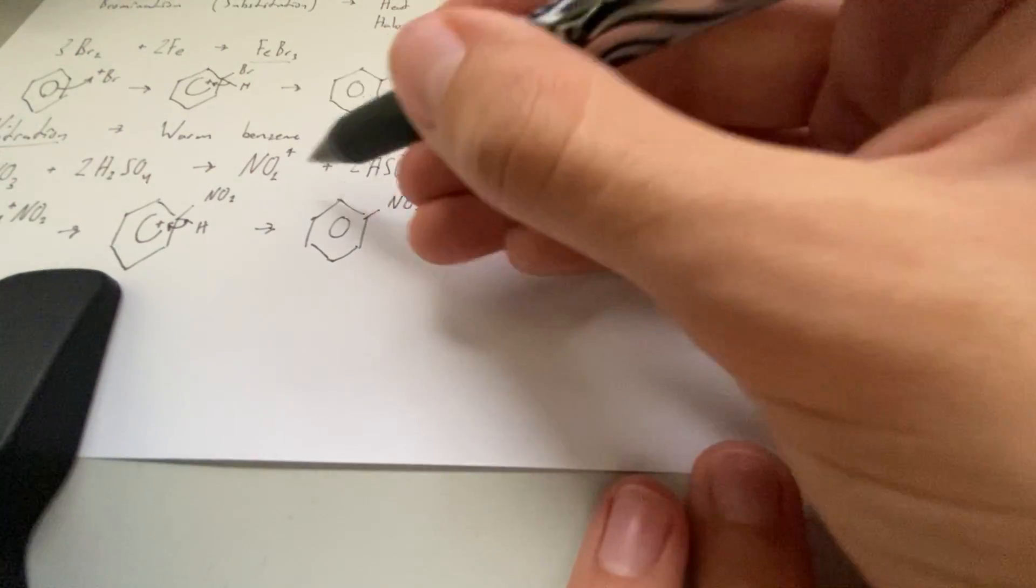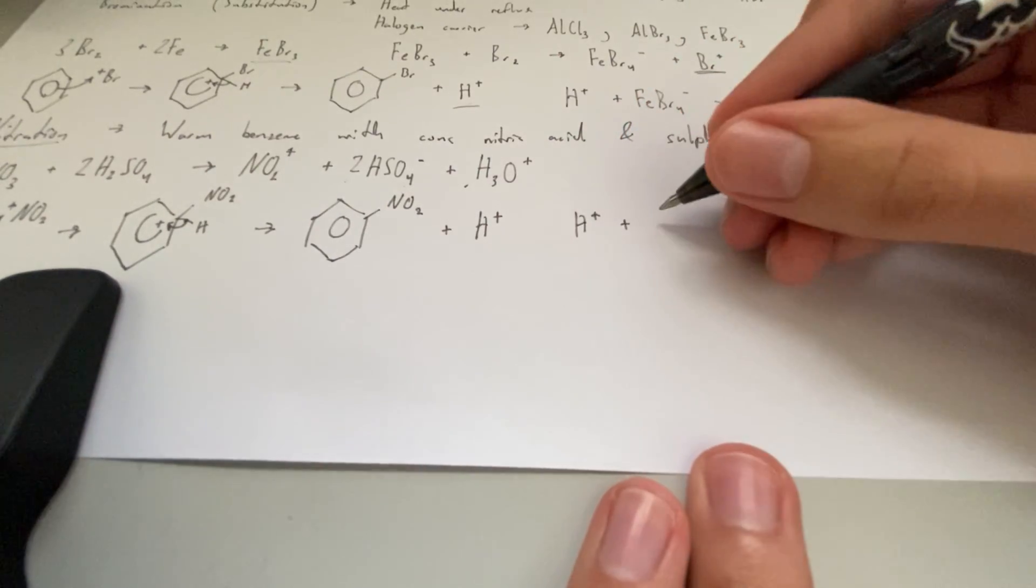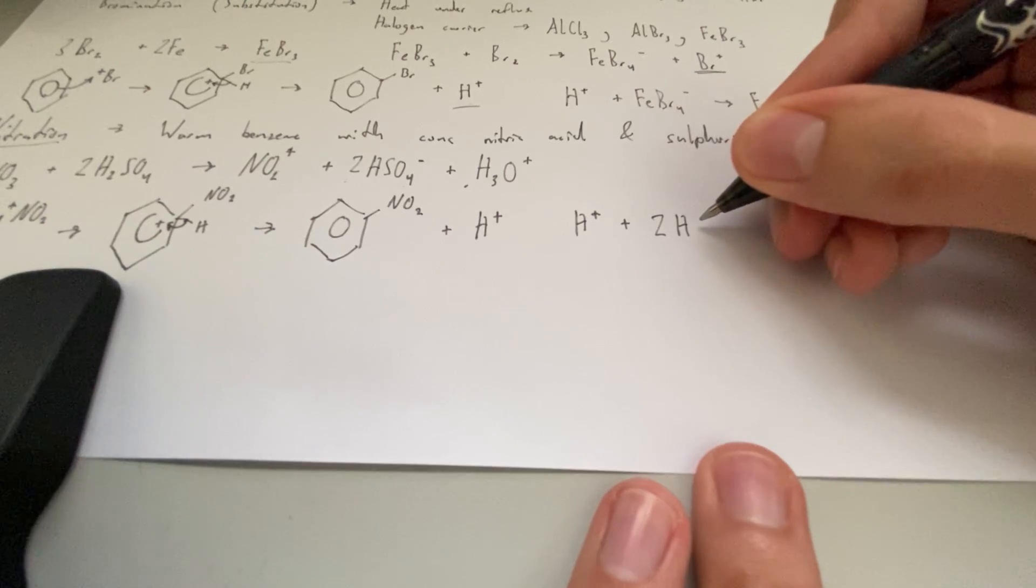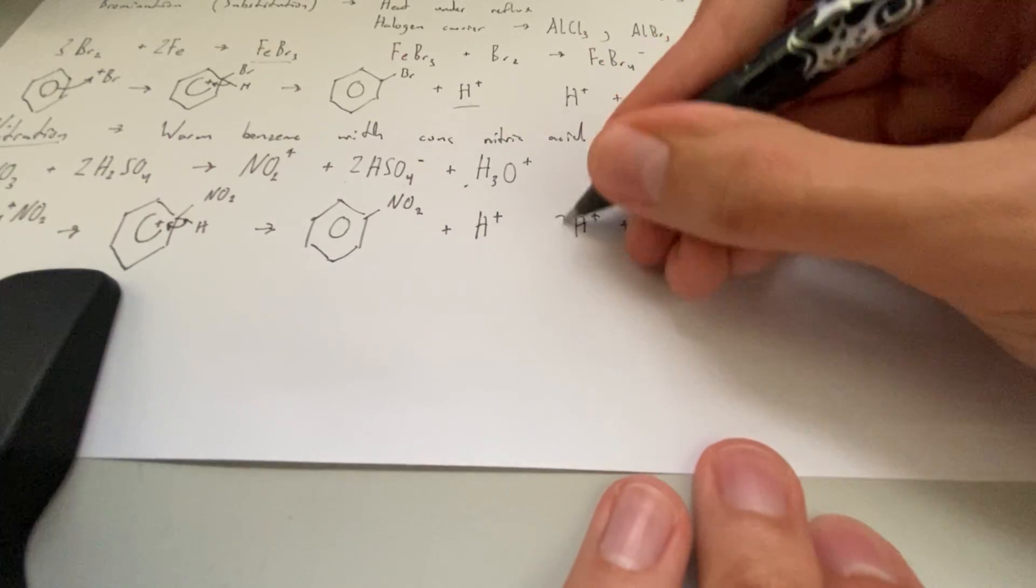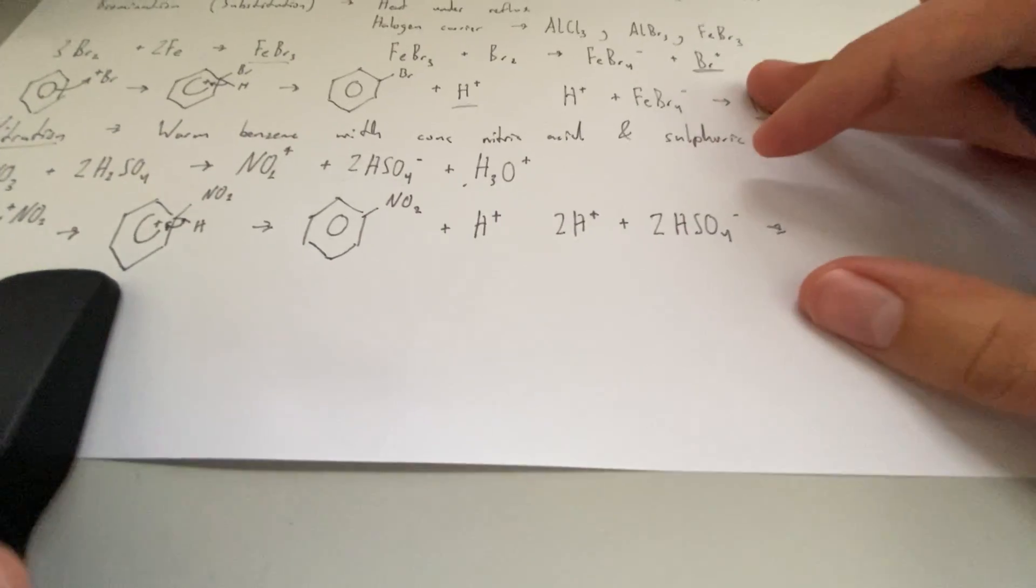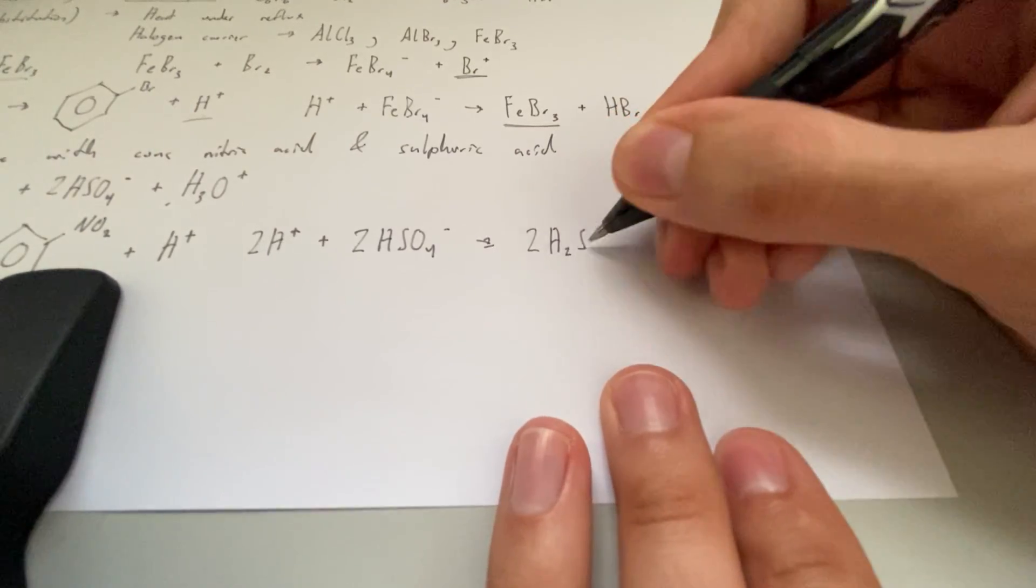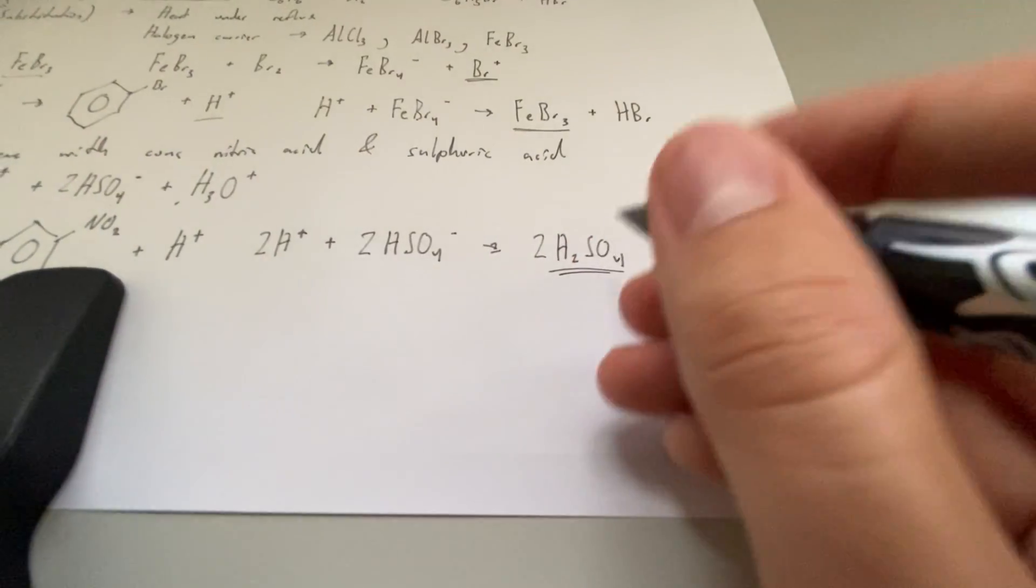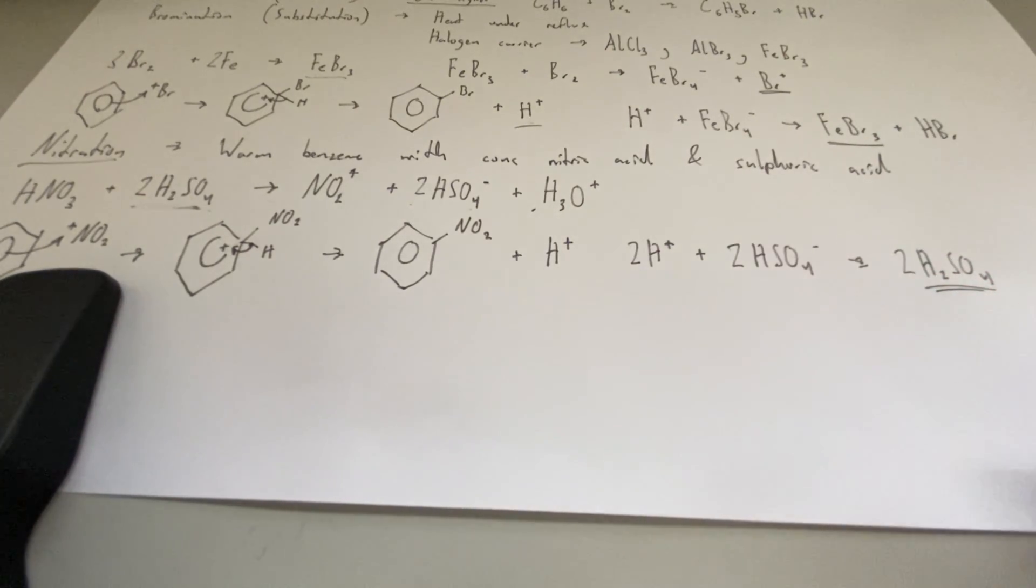As usual, the bond in this hydrogen is going to be sacrificed to reestablish this ring of delocalized electrons, the unhybridized p orbitals. We end up with NO2 and a H plus ion. And you'll notice that this is what we have left: H plus plus 2HSO4 minus. That's going to make 2H2SO4. So we have our catalyst again.